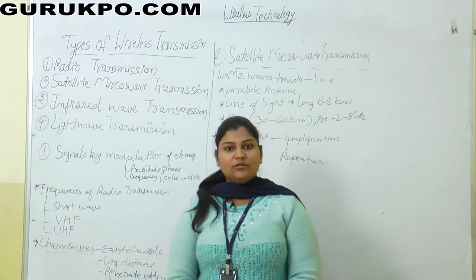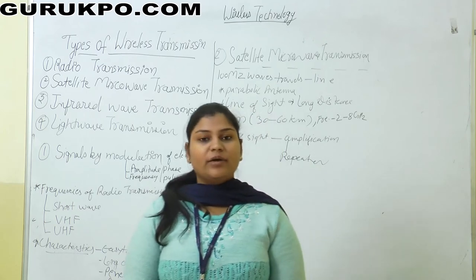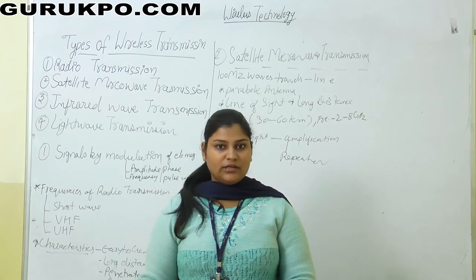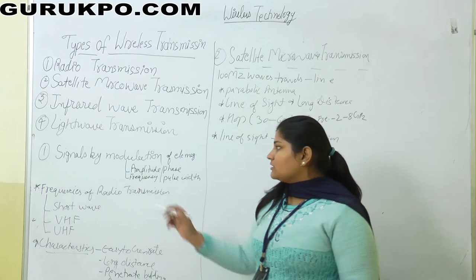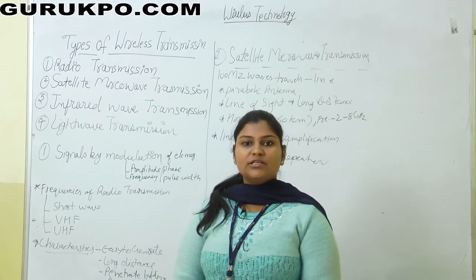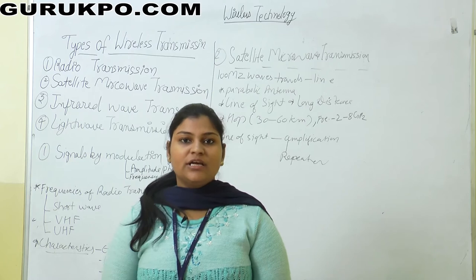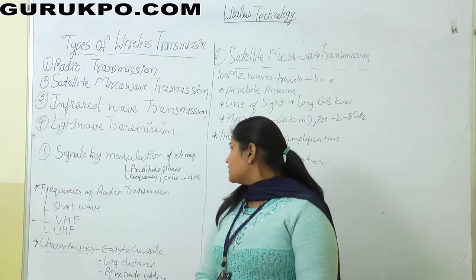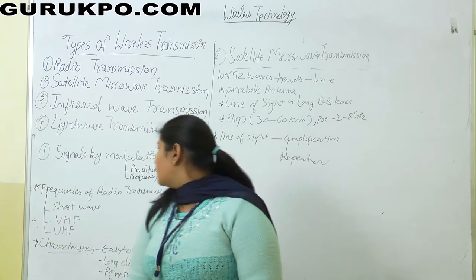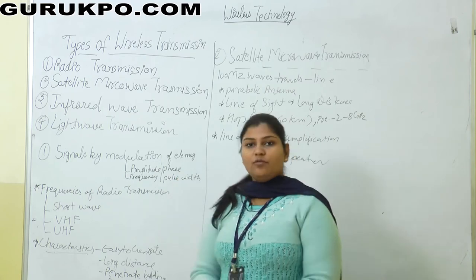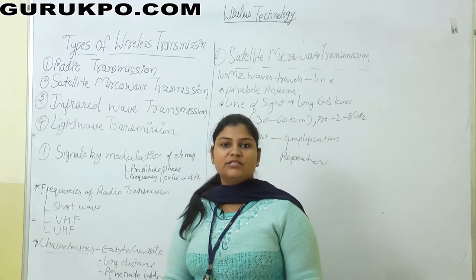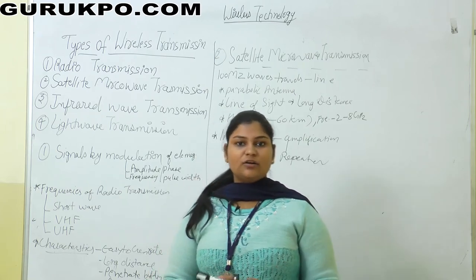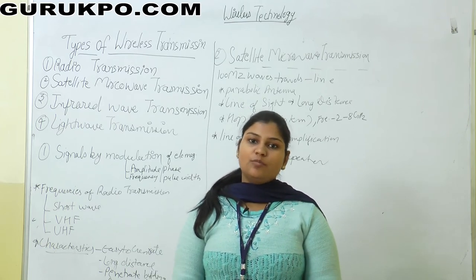First, we are going to discuss about Radio Transmission. In radio transmission, electromagnetic waves go from one place to another through electromagnetic signals by the modulation of signals. Modulation is the changing of waves in terms of amplitude, phase, frequency, and pulse width. Basically, modulation is the changing of language from one form to another. So when signals are going from one place to another, they are modulated.